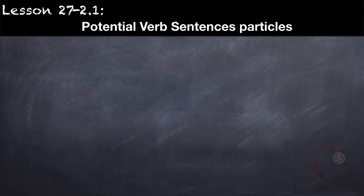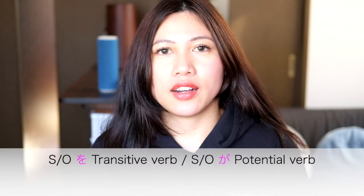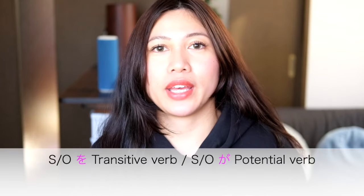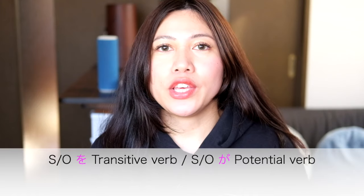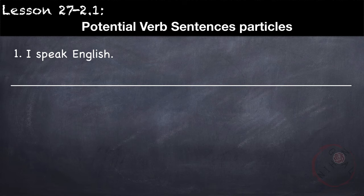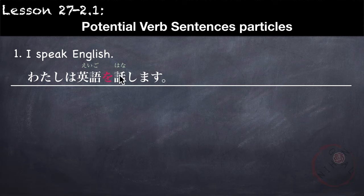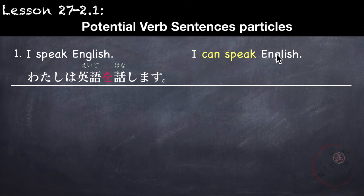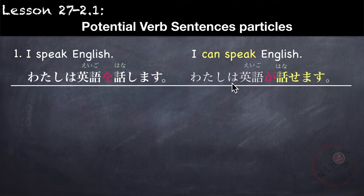Potential verb sentences — particles: Usually the object of a transitive verb is marked with particle を. However, if we use the potential verb, we use particle が to mark the object. If the particle is に or へ, it stays the same. For example: わたしは英語を話します uses を, but when using the potential verb — わたしは英語が話せます — を becomes が, and 話します becomes 話せます.